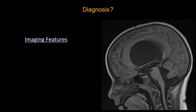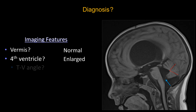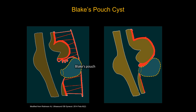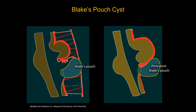What about this case? Looking at the important landmarks: the vermis appears normal in size. There is mild mass effect against the inferior part of the vermis, but it is not hypoplastic. The fourth ventricle is enlarged, but the tegmental-vermian angle — those two lines — are parallel and roughly zero degrees, so that's normal. The posterior fossa is not expanded. The patient does have hydrocephalus, indicating obstruction. This entity is Blake's pouch cyst. Recall that Blake's pouch should involute at the 12th gestational week, forming the foramen of Magendie to serve as the CSF outlet. If you have a persistent Blake's pouch cyst, CSF outflow is obstructed, so Blake's pouch cyst typically presents with some degree of hydrocephalus.